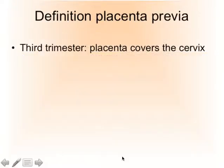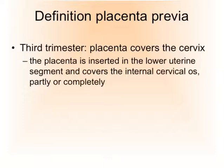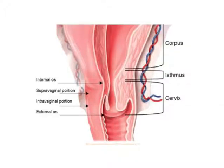What is the definition? Placenta previa means in the third trimester the placenta covers the cervix. In other words, the placenta is inserted in the lower uterine segment and covers the internal cervical os partly or completely. The internal cervical os — here, in a cross-section through a non-pregnant vagina, cervix and lower uterine segment — this is the area which we refer to as the internal os.